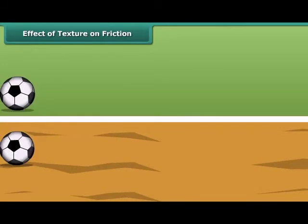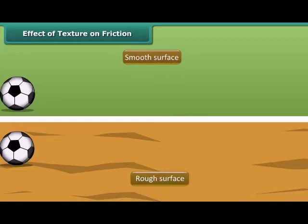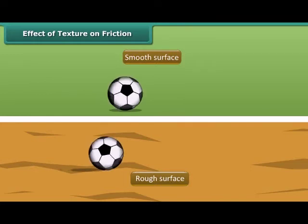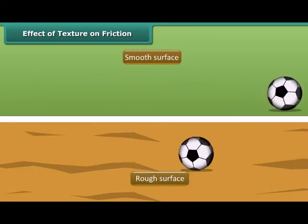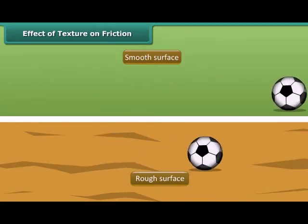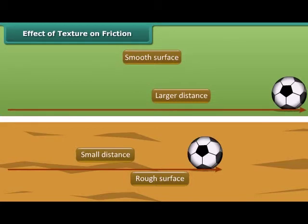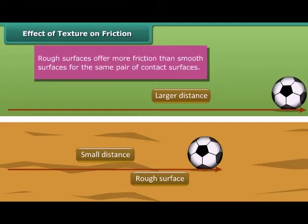A ball is rolled on a smooth surface and another similar ball on a rough surface. Both balls start rolling on different surfaces with the same speed, same force, and at the same time. But the ball rolling on the smooth surface travels a larger distance than the ball rolling on the rough surface. This shows that rough surfaces offer more friction than smooth surfaces, proving that friction depends on the texture of contact surfaces.